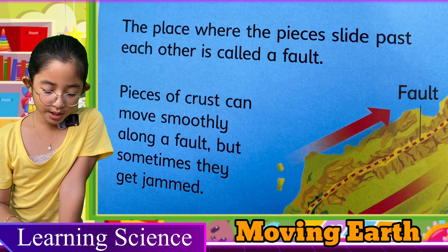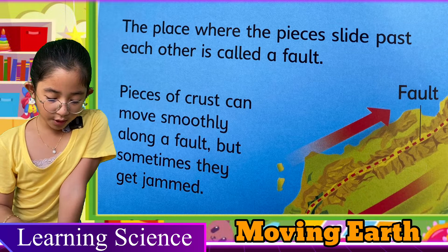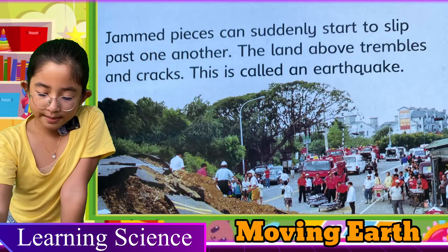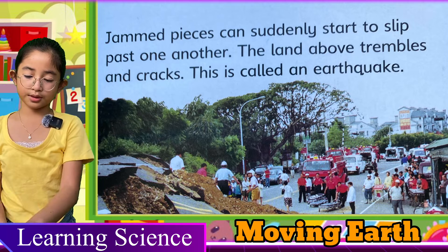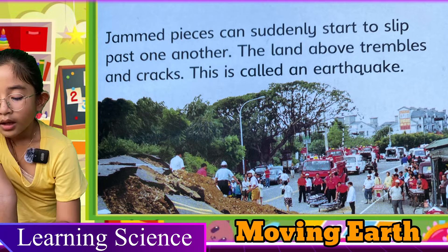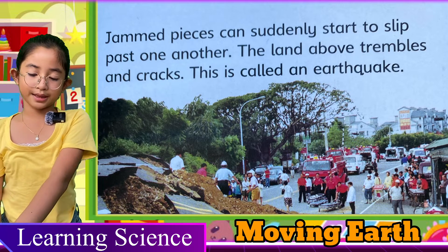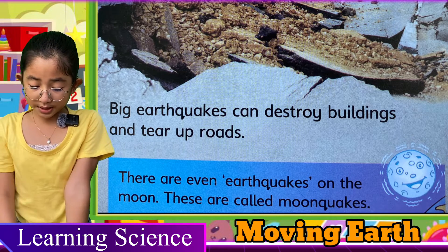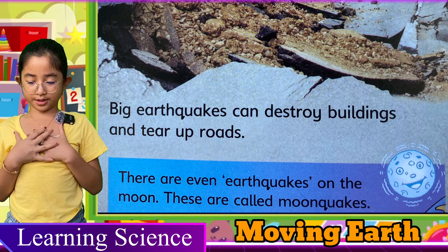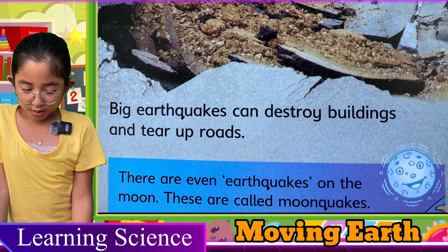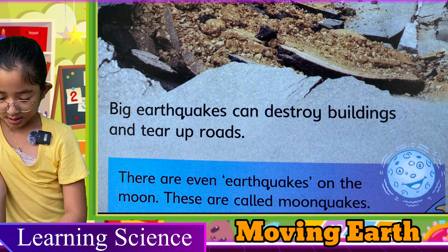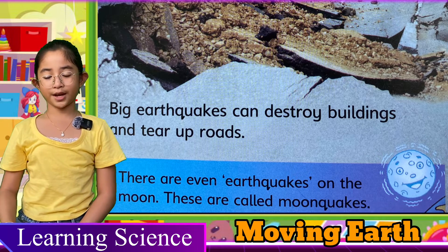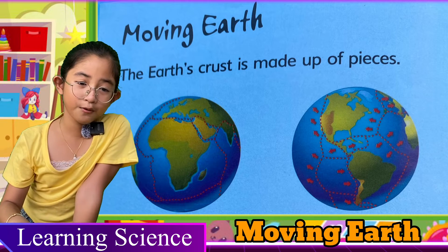Pieces of crust can move smoothly along a fault, but sometimes they get jammed. Pieces can suddenly start to slip past one another — the land jolts and cracks. This is called an earthquake. Big earthquakes can destroy buildings and tear up roads. Oh my god, this is so scary! There are even earthquakes on the moon — these are called moonquakes. Moonquakes! I never heard of that.